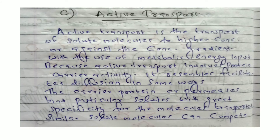Active transport is the transport of solute molecules to higher concentration, that is, against the concentration gradient, with the use of energy. Active transport involves protein carrier activity. Similar to facilitated diffusion, active transport uses a carrier protein called a permease, which is specific for a particular solute.